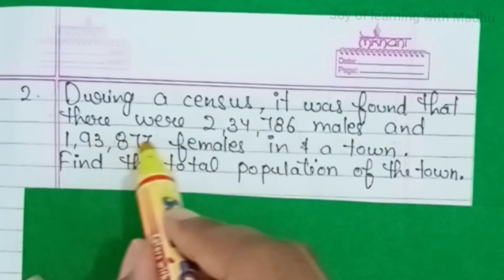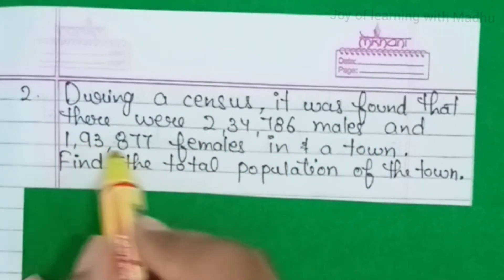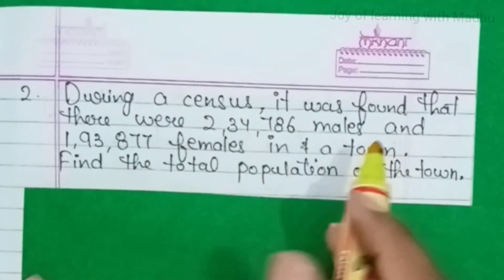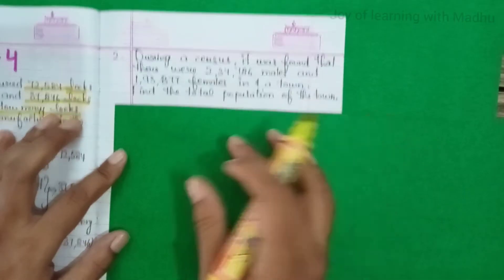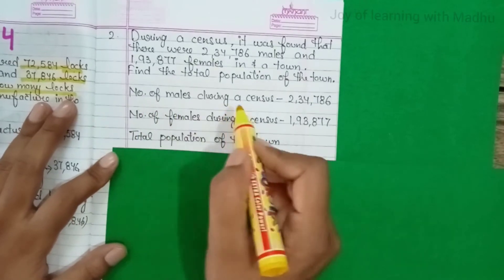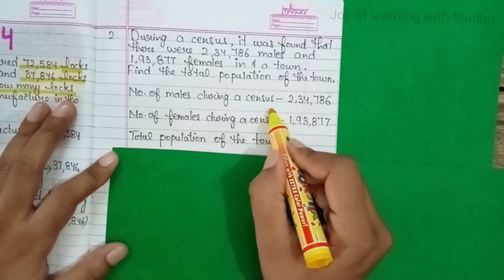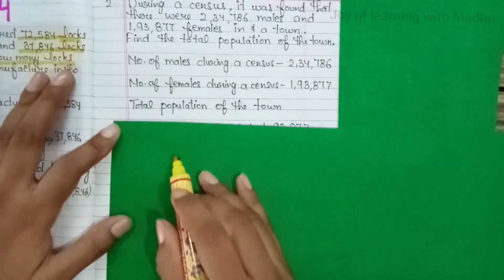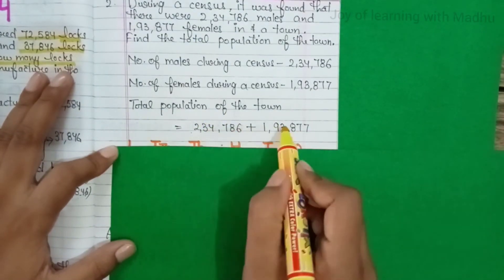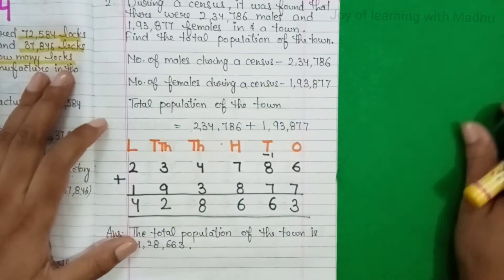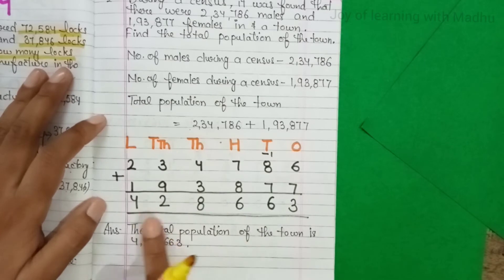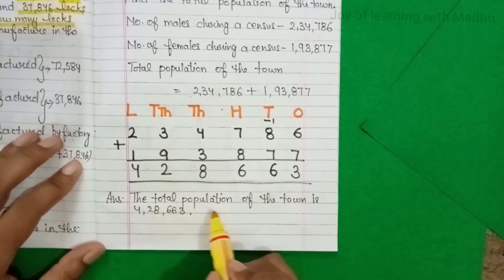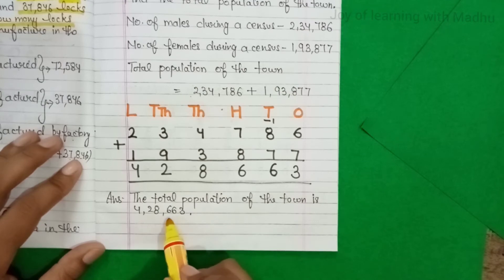एक town में males और females की संख्या दी गई है। Total population बताने के लिए दोनों को add करना होगा। Statement: number of males during a census = 2,34,786; number of females during a census = 1,93,877. दोनों को add करने के बाद, the total population of the town is 4,28,663.